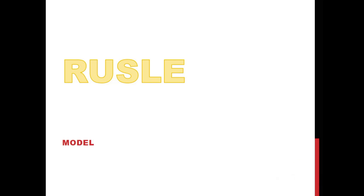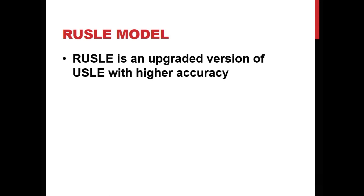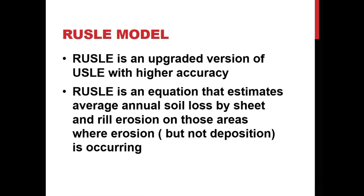RUSLE, or the Revised Universal Soil Loss Equation, is an upgraded version of USLE with higher accuracy. RUSLE is an equation that estimates average annual soil loss by sheet and rill erosion on those areas where erosion, but not deposition, is occurring.